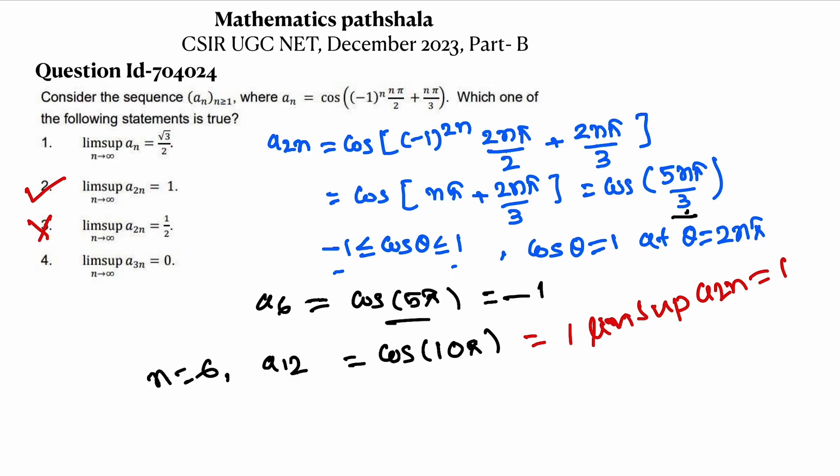Now see, a_12 belongs to a_3n. When n equals 4, then the element of a_3n becomes a_12. So since a_12 belongs to a_3n and cos θ takes maximum value 1, therefore sup of a_3n also becomes 1 because a_12 equals 1.